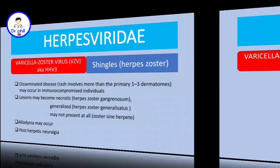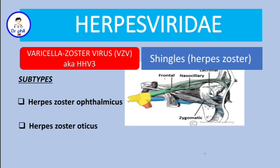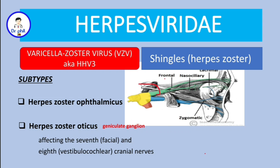Two important subtypes of shingles: herpes zoster ophthalmicus involves the V1 branch (ophthalmic nerve) of the trigeminal nerve and can lead to loss of vision. Herpes zoster oticus involves the geniculate ganglion, affecting both the facial nerve and vestibulocochlear nerve — this combination is known as Ramsay Hunt syndrome.